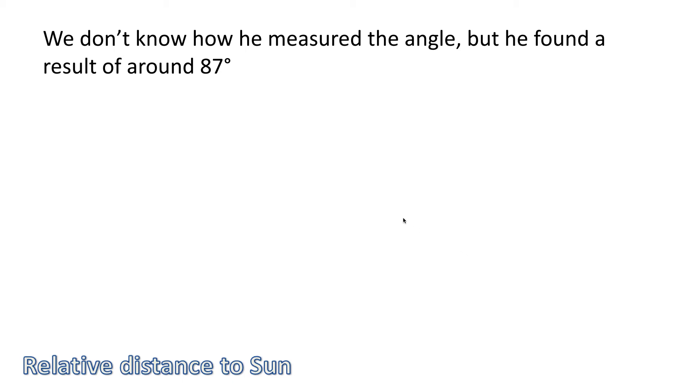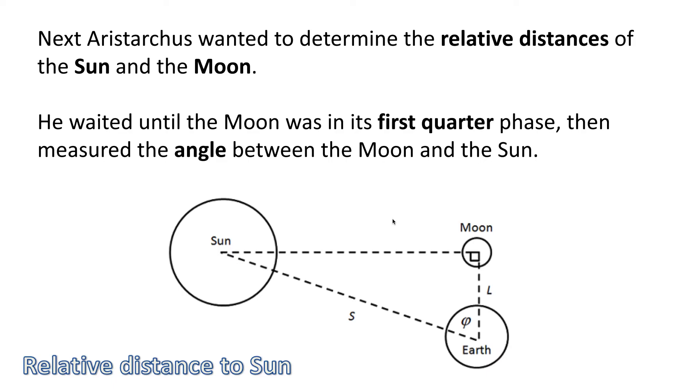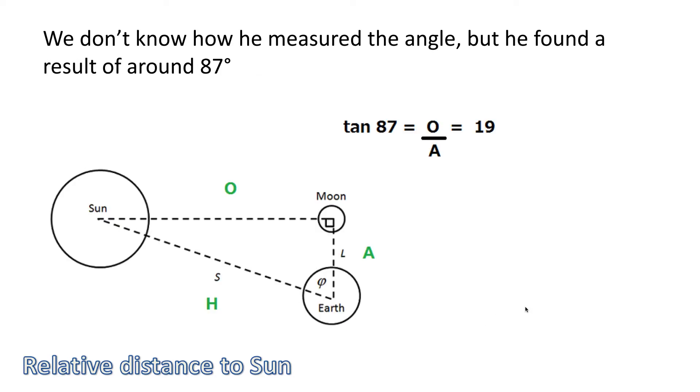We don't know how he measured it, but he found a result of around 87 degrees. If we go back and look at this picture, that doesn't look like 87 degrees, but remember that the sun is very, very far away from the earth and the moon, so it would be pretty close to 87 degrees.